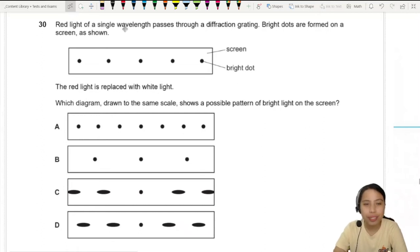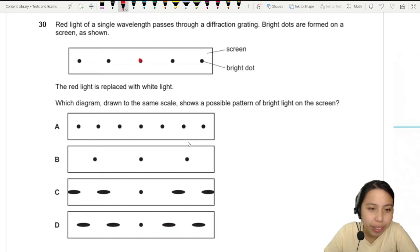Red light of a single wavelength passes through a diffraction grating. Bright dots are formed on the screen as shown. The red light is replaced with white light. Which diagram shows a possible pattern of bright light on the screen? Let's turn these dots red so we can see them.